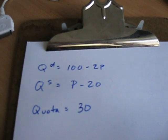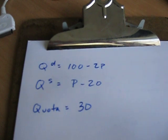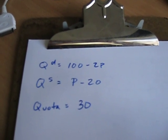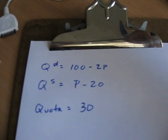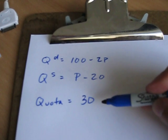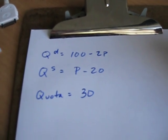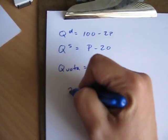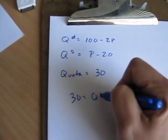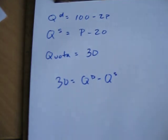The only trick when you have a quota as opposed to a tariff is: rather than using prices to get quantity, you use quantities to get prices. Suppose this is your demand curve, this is your supply curve, and the quota is limiting imports to 30. So 30 is the level of imports — that's the gap between quantity demanded and quantity supplied.